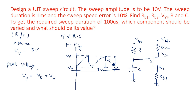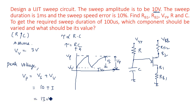The total peak voltage Vp is calculated by adding sweep voltage Vs and valley voltage Vv. So Vp equals Vs plus Vv, which is 10 volts plus 3 volts, giving a peak value of 13 volts. Don't get confused — the sweep amplitude given is Vs, not Vp. So we have calculated Vp as 13 volts by assuming a valley voltage of 3 volts.